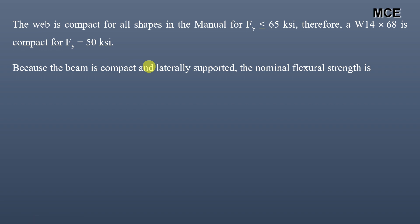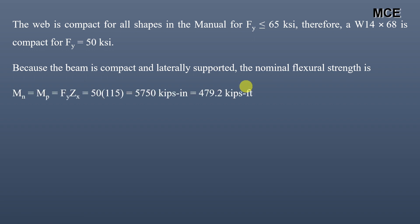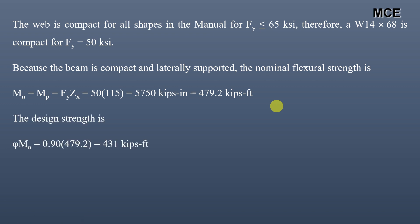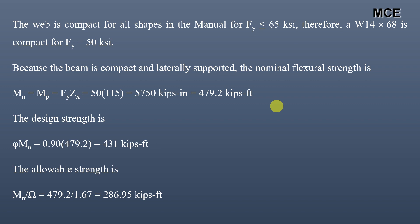Because the beam is compact and for Part A it is laterally supported, the nominal flexural strength is governed by AISC equation F2-1. The nominal moment strength MN equals MP equals FY times ZX, which is 50 × 115 = 5750 kip-inch, or 479.2 kip-feet. The LRFD design strength is 0.9 × 479.2 = 431 kip-feet. The ASD allowable strength is 479.2 / 1.67 = 286.95 kip-feet.